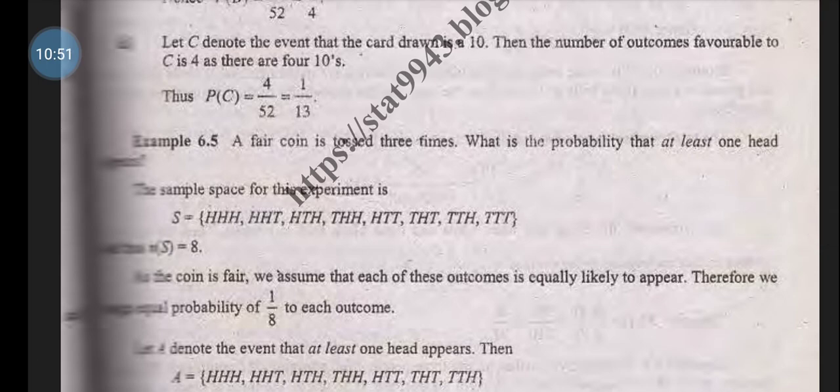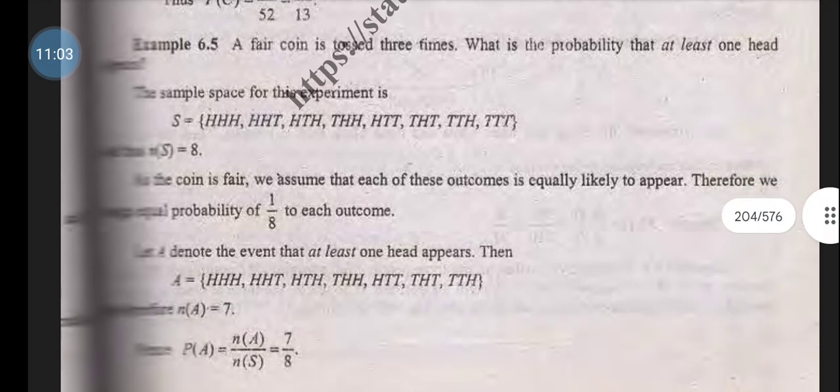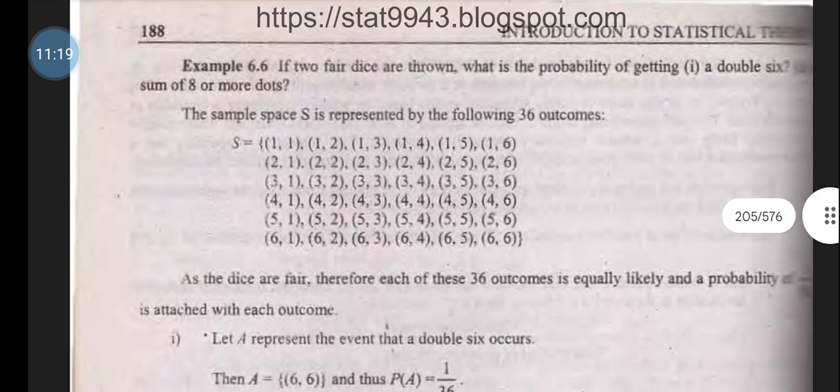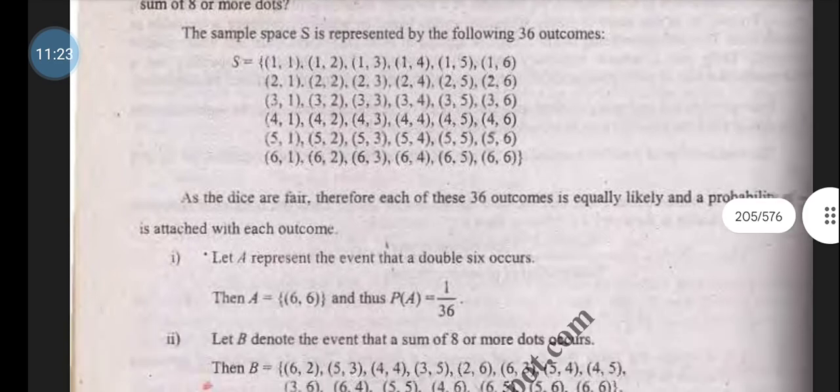Example: A fair coin is tossed three times. What is the probability that at least one head appears? The sample space is {HHH, HHT, HTH, HTT, THH, THT, TTH, TTT}. All outcomes have probability 1/8. The only outcome without a head is TTT, so P(at least one head) equals 7/8.